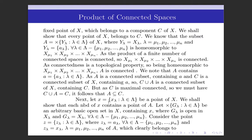Next, let x = {x_λ}, λ ∈ Λ, be any point of X. We shall show that each neighborhood of x contains a point of A. Let Cartesian product of G_λ's be an arbitrary basic open set in X containing x, where G_λ is open in X_λ and G_λ = X_λ for each λ other than μ₁, μ₂, …, μₙ. Consider the point z = {z_λ} where z_λ = a_λ for all λ different from μ₁, μ₂, …, μₙ, and z_λ = x_λ for λ = μ₁, μ₂, …, μₙ.